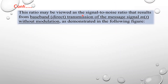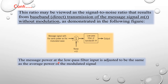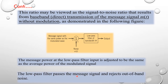The channel SNR may be viewed as the signal-to-noise ratio that results from baseband or direct transmission of the message signal m(t) without modulation, as demonstrated in the following block diagram. This block diagram consists of a summer circuit and a low-pass filter. The message signal is applied to the summer, noise w(t) is added, and the summer output is applied to the low-pass filter. The message power at the low-pass filter input is adjusted to the same as the average power of the modulated signal. The low-pass filter passes the message signal and rejects out-of-band noise.